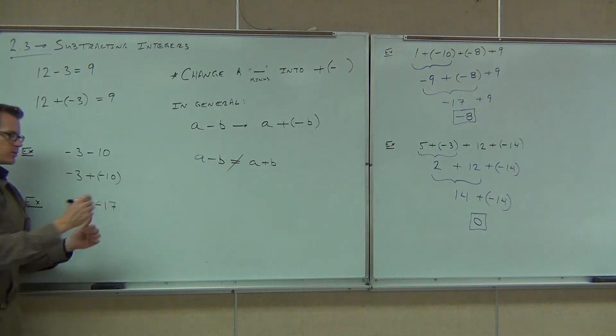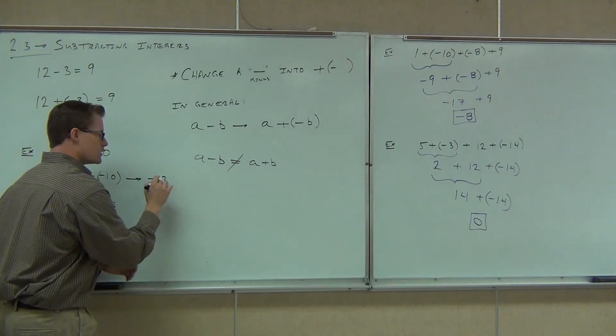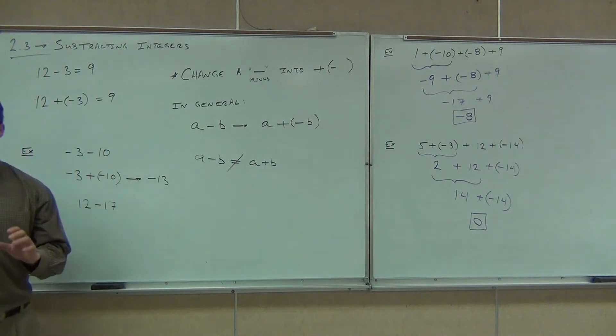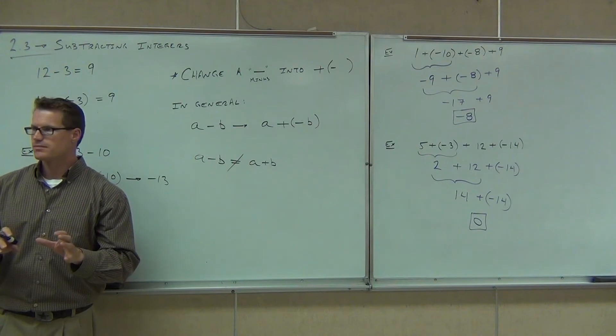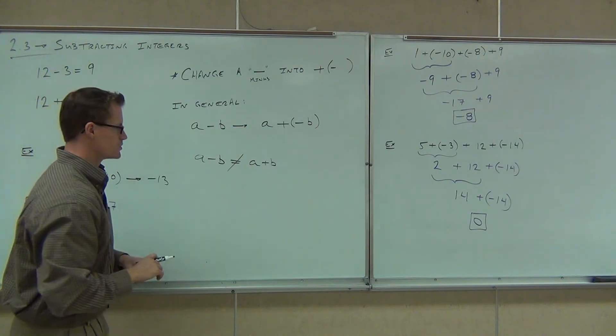Hey, can you do this problem now? Yeah. Negative 3 plus negative 10? Negative 13. Great. Same sign, add them together, keep the common sign. We just went over that. So our idea is change minuses and then use the addition rule. Change minuses and then use the addition rule.